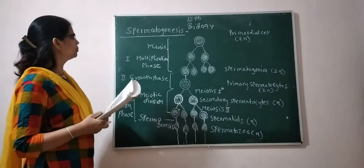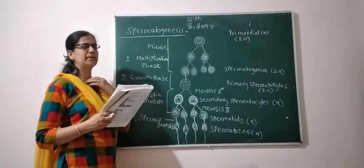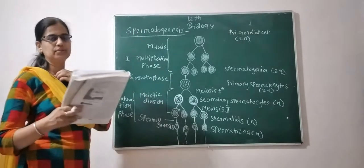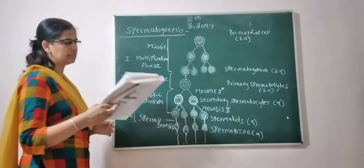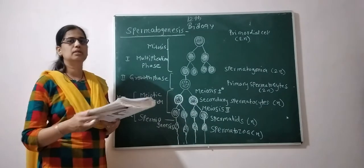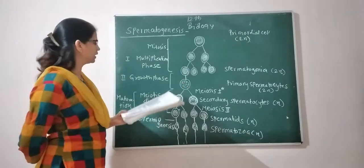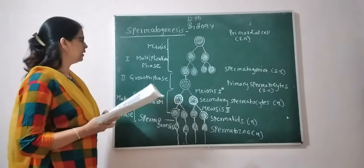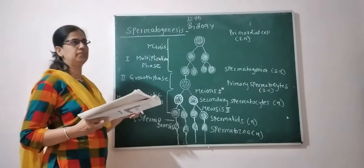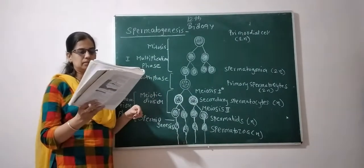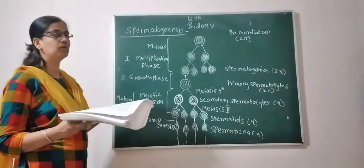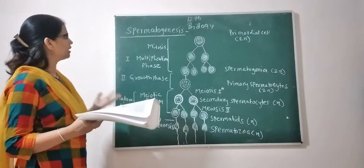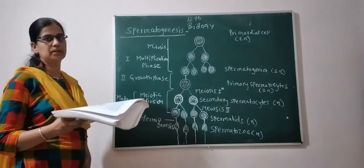We discuss the next process, which is spermatogenesis, included as part of gametogenesis. Gametogenesis is the process of formation of gametes in a sexually reproducing animal. The male gametes are sperm and the female gametes are ovum, or egg. The gametes are formed in this particular process.